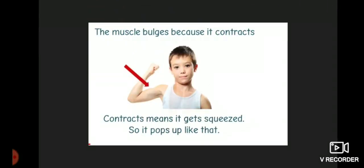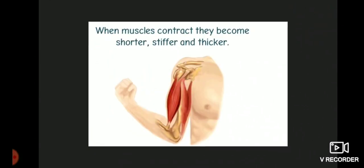The muscle bulges because it contracts. Contracts means it gets squeezed. So it pops up like that. When muscles contract, they become shorter, stiffer and thicker.